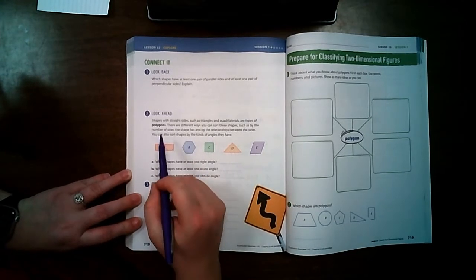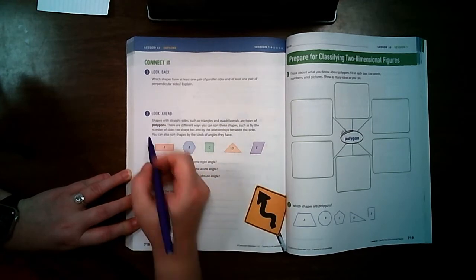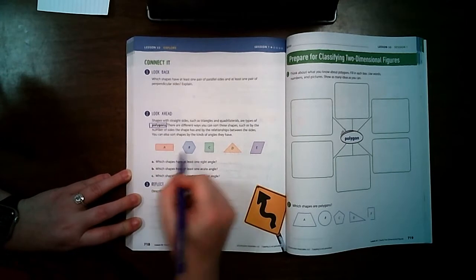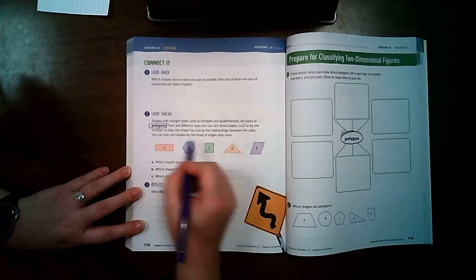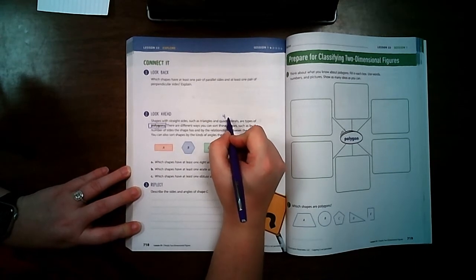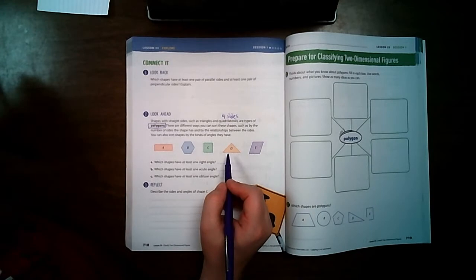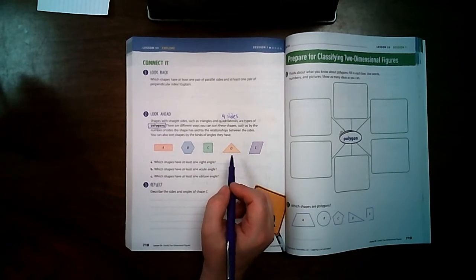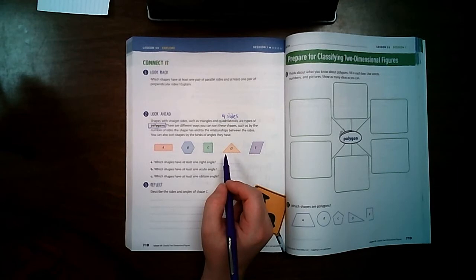So taking a look at this, shapes with straight sides such as triangles and quadrilaterals are types of polygons. Okay. So these are all types of polygons. But they're not all quadrilaterals. That's a good thing to pay. Quadrilaterals have four sides. So you'll want to pay attention because this triangle right here is not a quadrilateral.